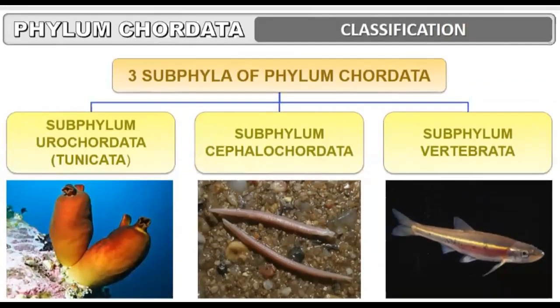There are three sub-phyla of Phylum Chordata. We use the mnemonic 'keep pot clean' to remember them. The phylum Chordata is divided into three sub-phyla: Urochordata, Cephalochordata, and Vertebrata.